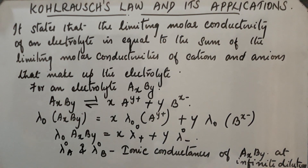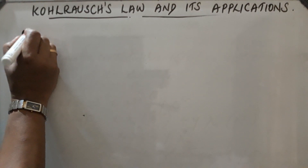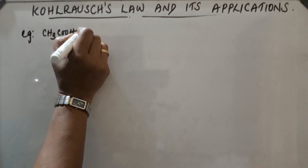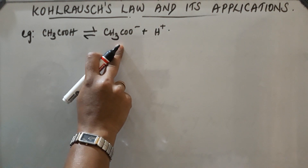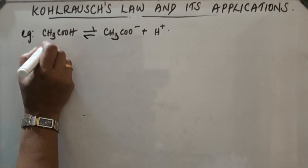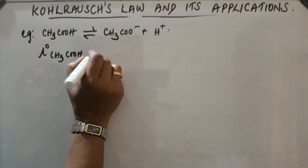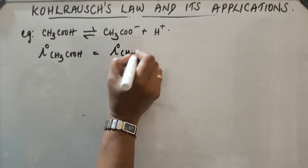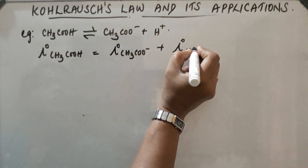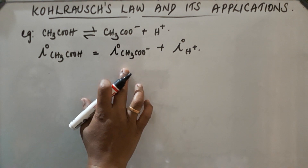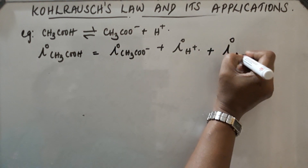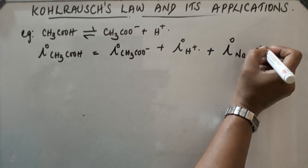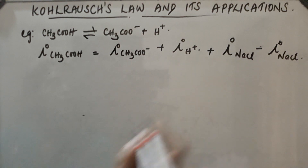Let us take one example using acetic acid. Acetic acid CH₃COOH dissociates as CH₃COO⁻ plus H⁺, where CH₃COO⁻ is the anion and H⁺ is the cation. So λ°(CH₃COOH) = λ°(CH₃COO⁻) + λ°(H⁺). This follows Kohlrausch's Law — the sum of the limiting molar conductivities of the anion and cation.